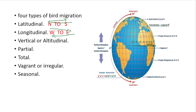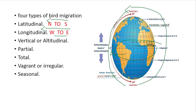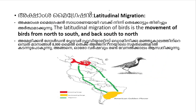An example of Latitudinal Migration is the American Golden Plover, scientific name Pluvialis dominica. It migrates between the North Arctic region and South Lake areas.